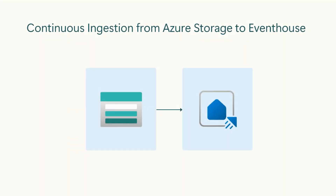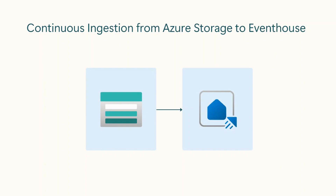Let's take a look. Continuous ingestion from Azure Storage to Event House. This feature allows you to automatically bring new files from your Azure Storage account to Fabric Event House.